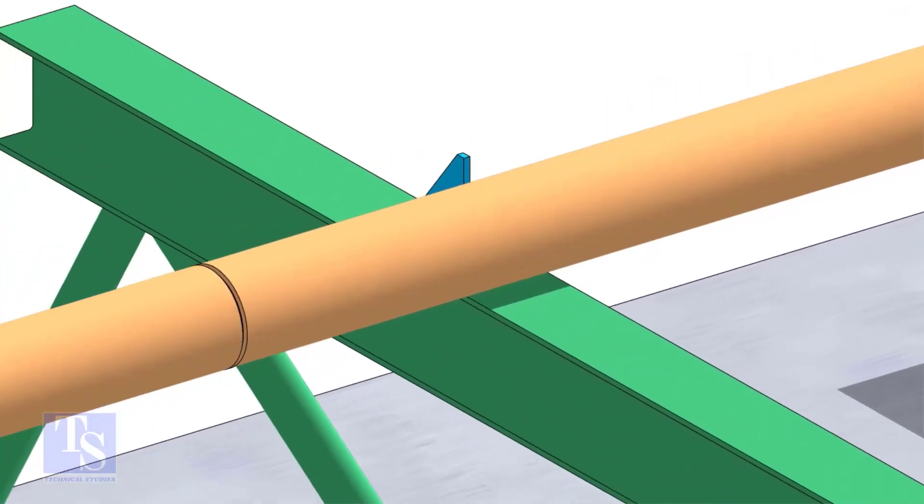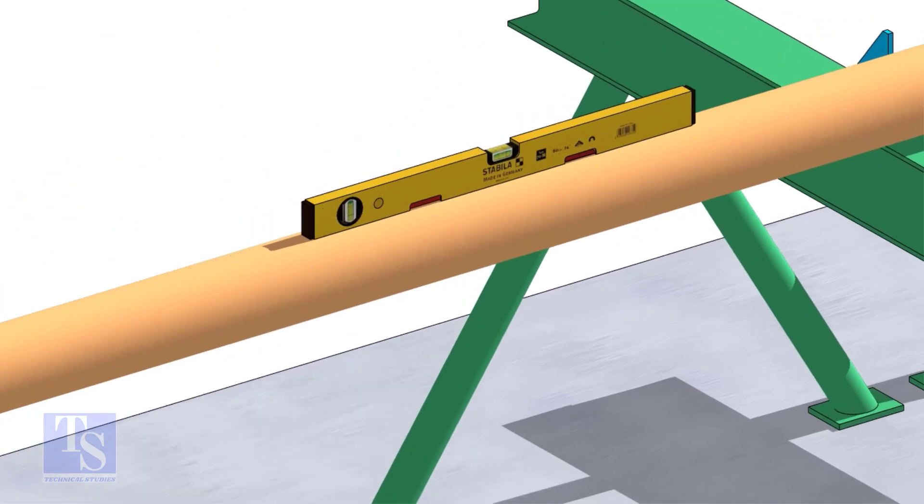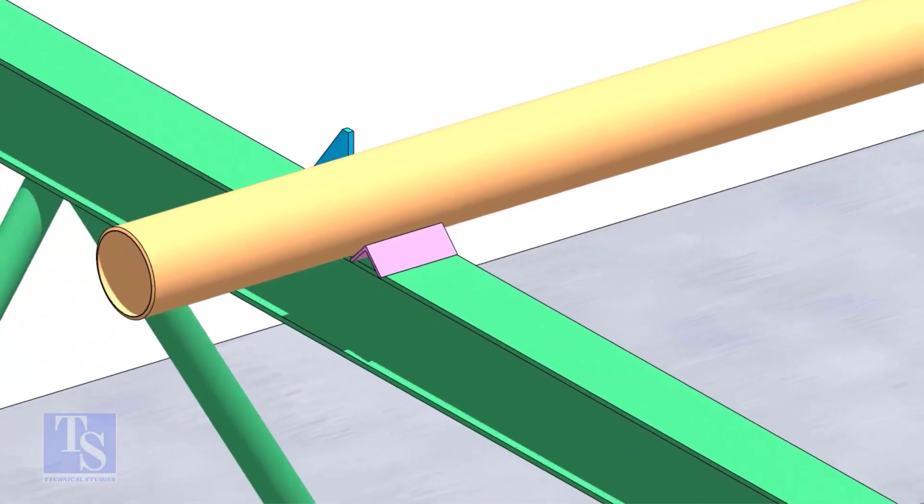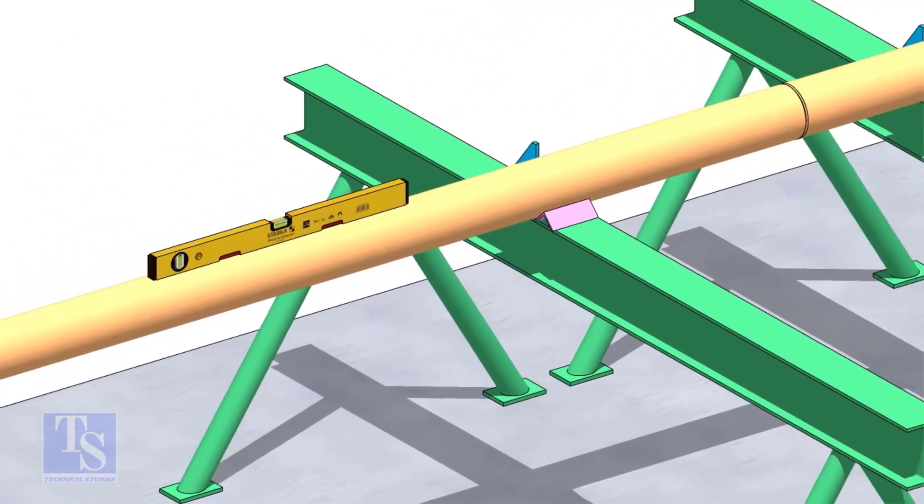You can cross-check the level of the pipes. Arrest the pipes from the other side, using wedges or angle stubs.